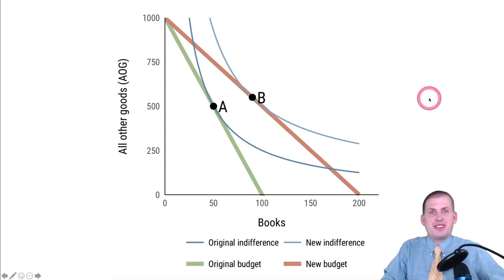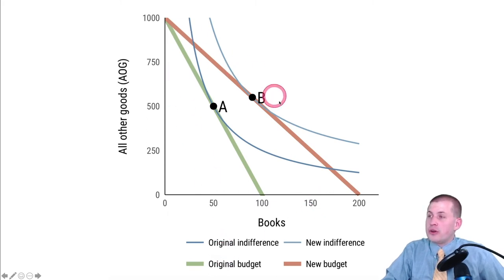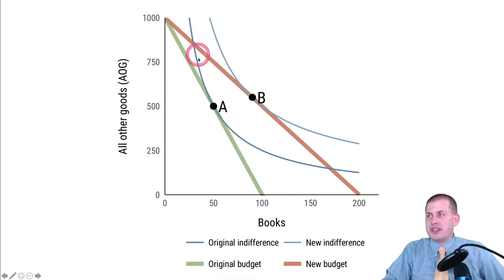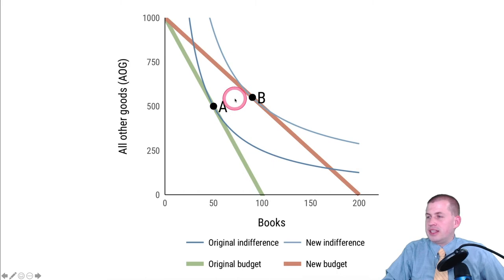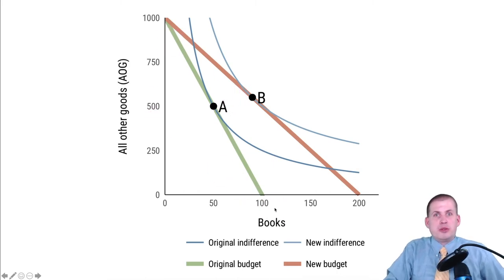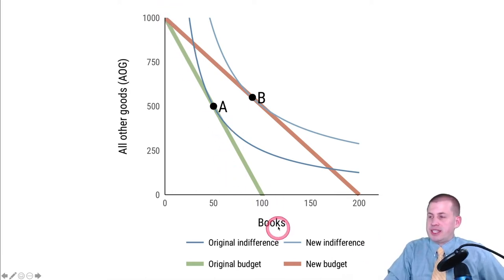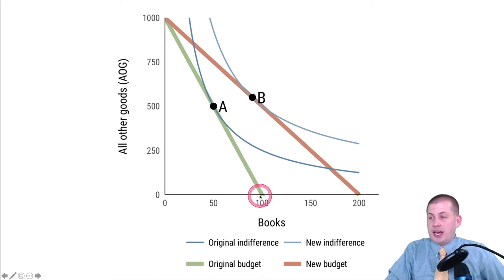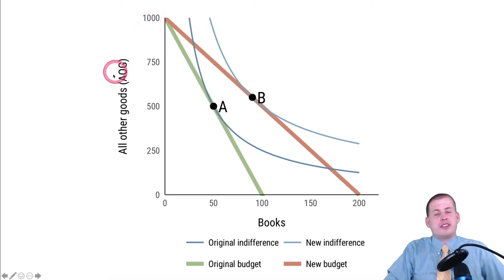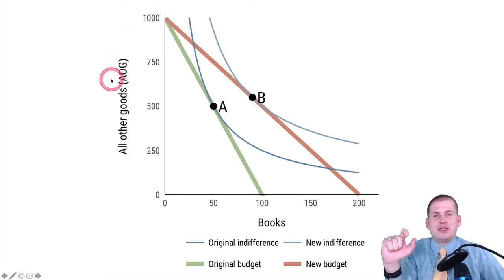In this graph, ignore the orange line and just look at the green line — this is a normal budget line with an indifference curve tangent to it. Given your budget, you could spend all of your money on 100 books or all of it on a thousand of other stuff. Generally in these economic problems, instead of comparing two different goods like waffles and calzones, we say good one and everything else, since you're buying a billion different things throughout your life.